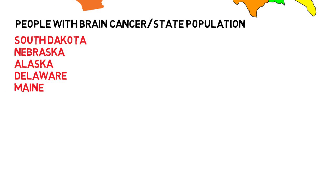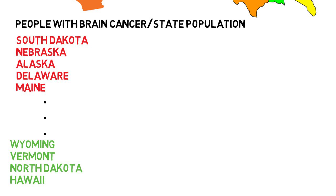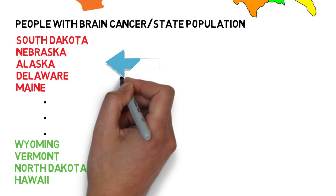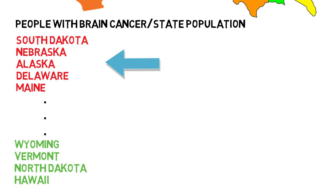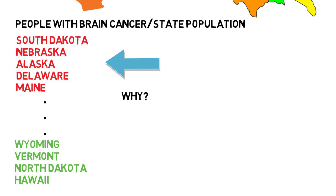These states have the highest percentage of people with brain cancer, much higher than average, and at the bottom of the list, these states have the lowest. So it looks like maybe we should avoid these states. But the real question is: why is it like this? Is there something in the water in these states, or are there other factors at play?